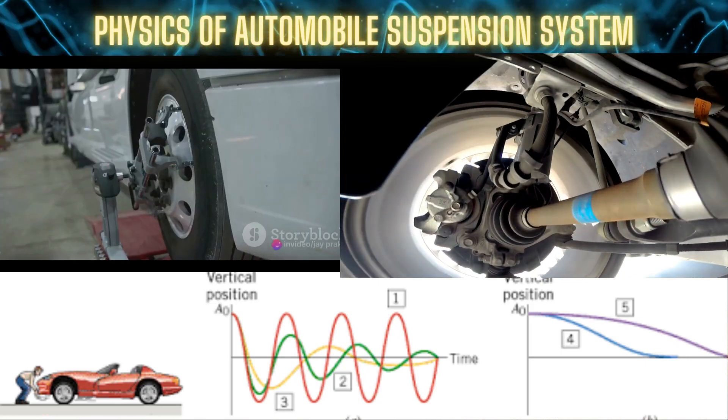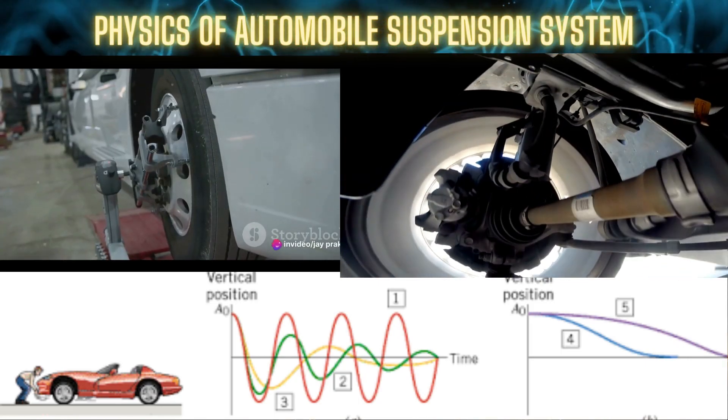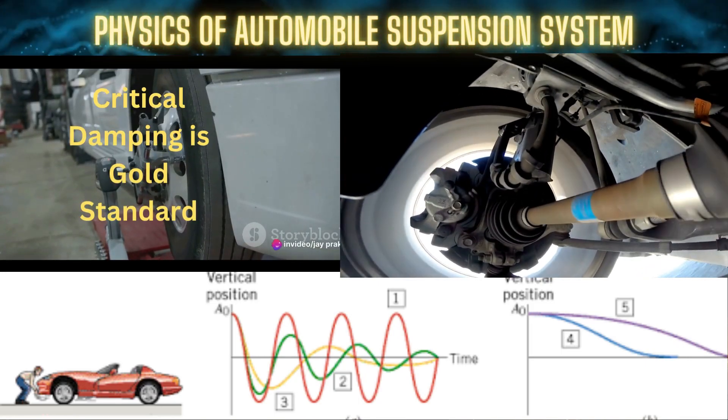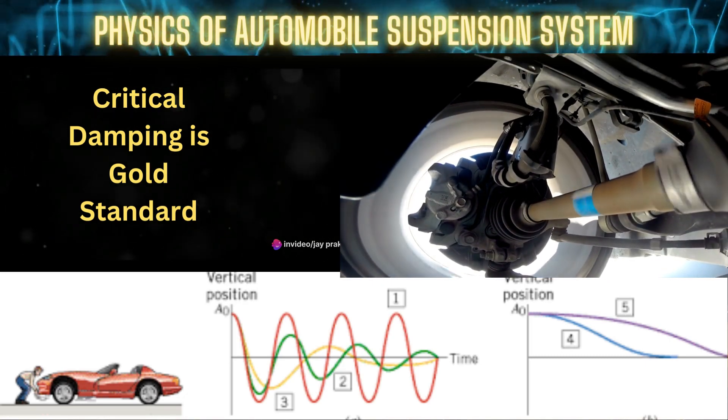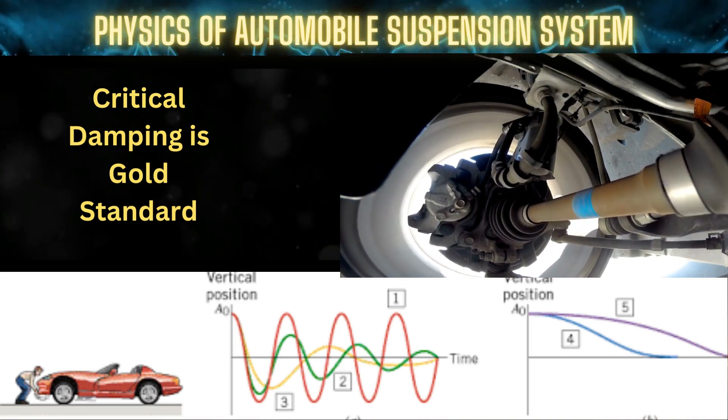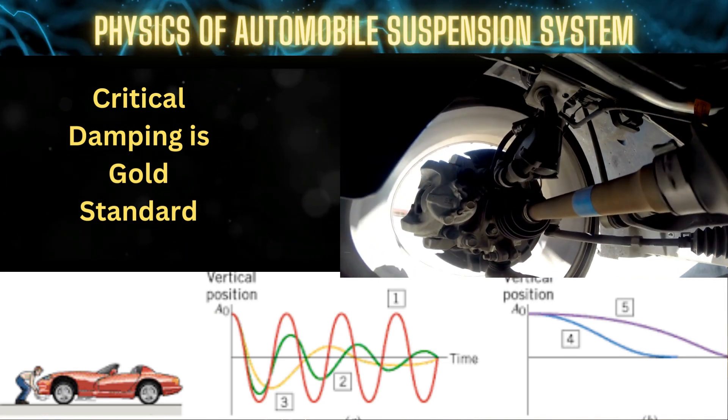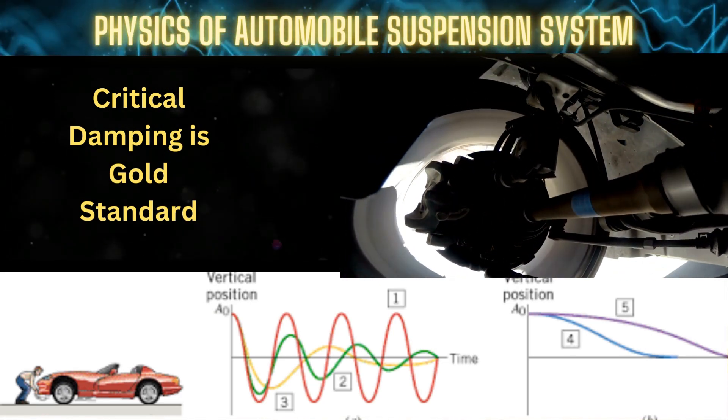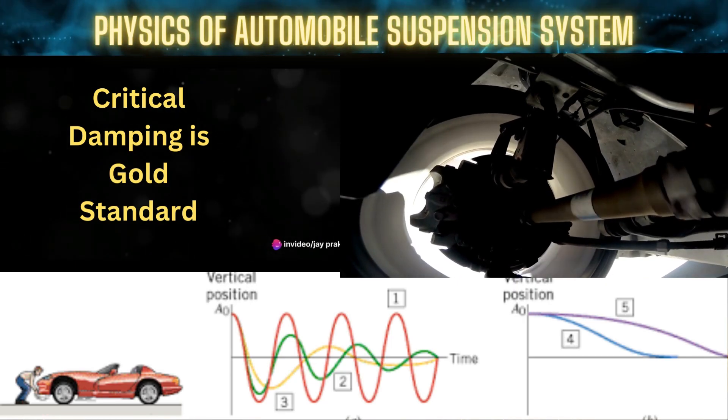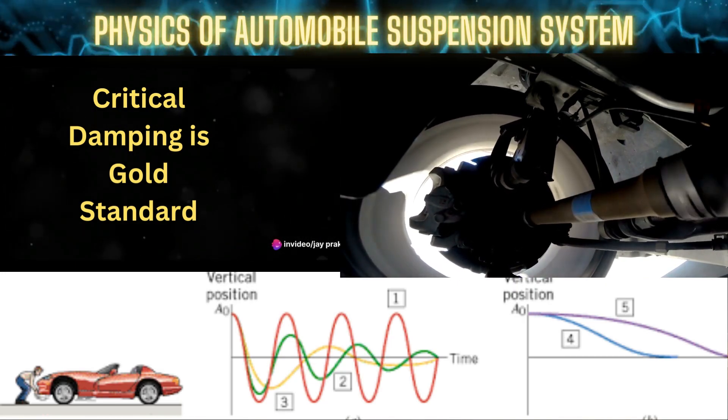That's where critical damping comes in. It provides the ideal balance, minimizing oscillations while maintaining responsiveness. The car smoothly absorbs the bumps, but it's still responsive enough to handle quick maneuvers. In the world of suspension systems, critical damping is the gold standard.